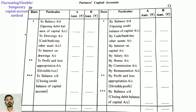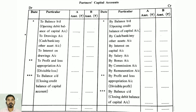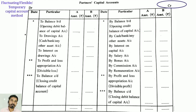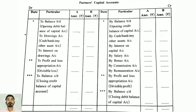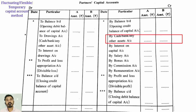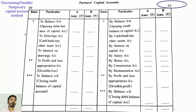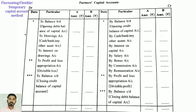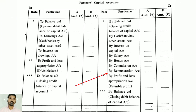On the credit side: 'By balance brought down' represents the opening credit balance of the capital account. Next, 'By cash or bank or any other assets account.' Next, 'By interest on capital account.' Next, 'By salary,' 'By bonus account,' 'By commission account,' 'By remuneration account,' and 'By profit and loss appropriation account' for divisible profit.